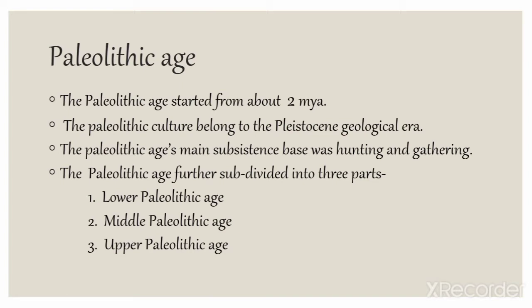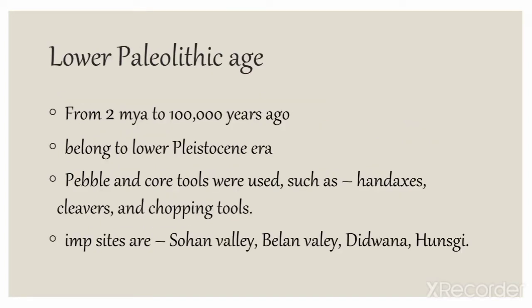The Paleolithic can be further divided into three parts: Lower Paleolithic, Middle Paleolithic and Upper Paleolithic. Lower Paleolithic starts from 2 million years ago to 100,000 years ago. It belongs to the lower Pleistocene era, during which there were many ice ages. The tools used were pebble and core tools — these were rudimentary, meaning not very polished. Core tools were not much refined. Hand axes and chopping tools are classic examples of Lower Paleolithic tools.